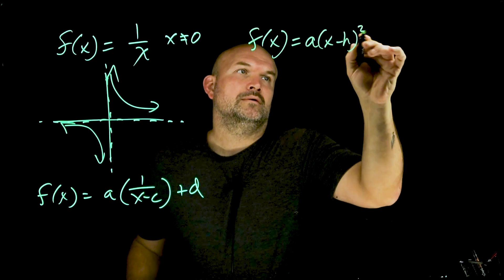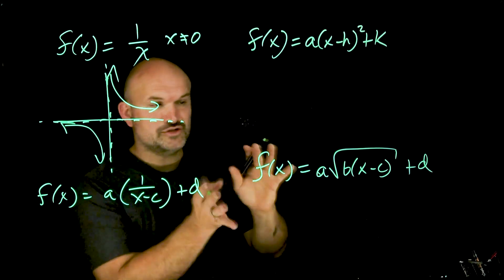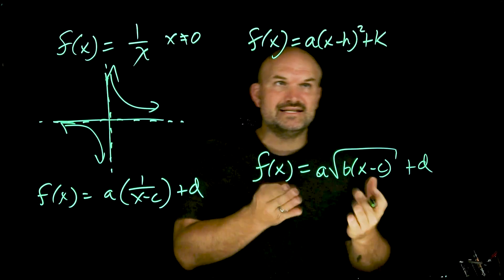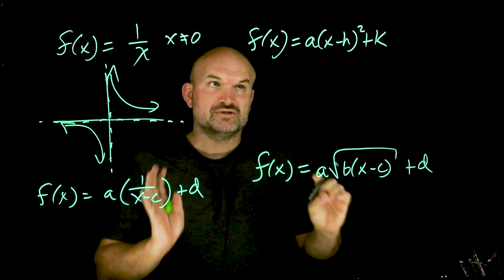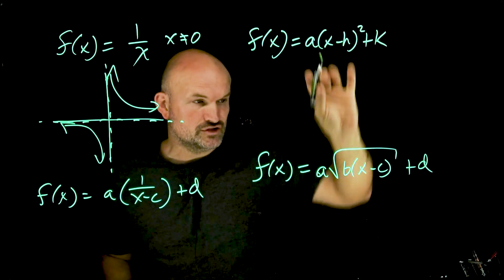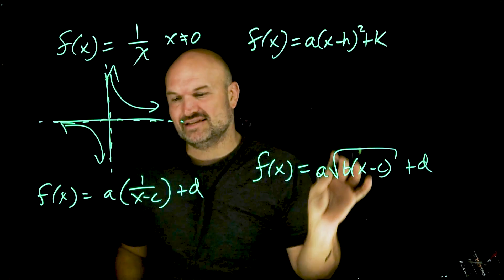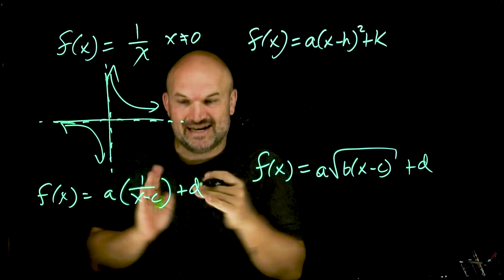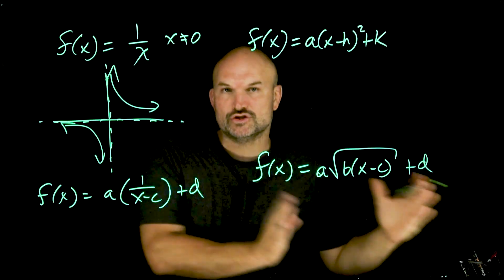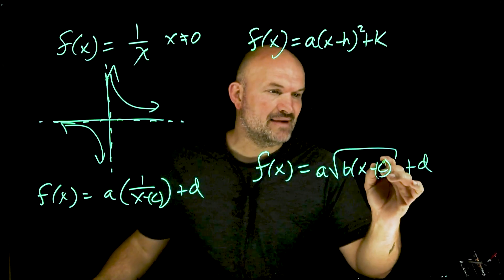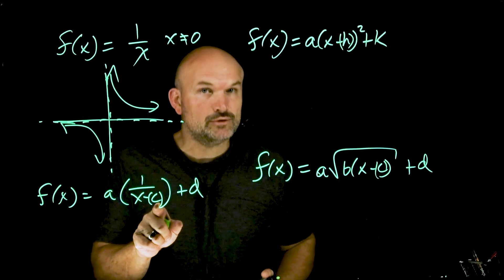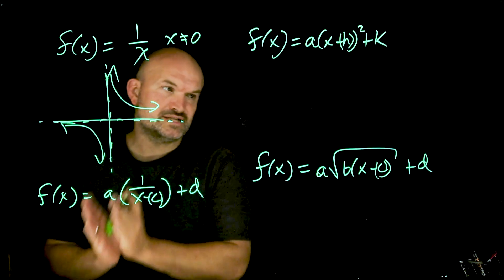To remember c and d, let's go back to what you know. With the quadratic we use h and k, but what really matters is where those letters appear. Notice that h and c are inside the function — inside the squared quantity, under the square root, or in the denominator. Whether it's x minus h, x minus c — they all produce the same result: a horizontal shift left or right. If it's x minus 5, you shift 5 units to the right; x plus 1 shifts one unit to the left.